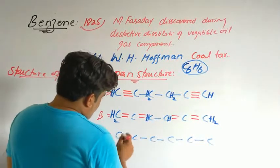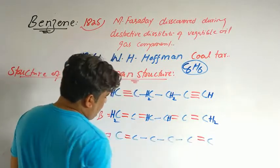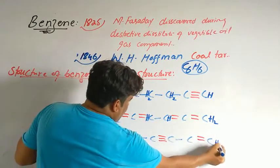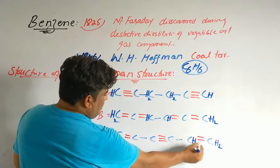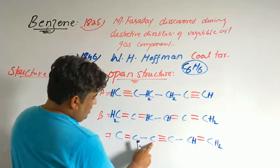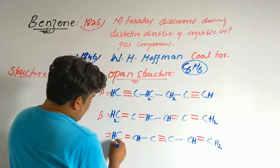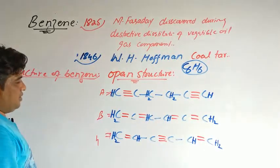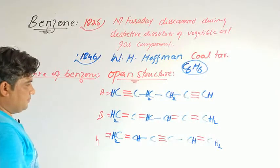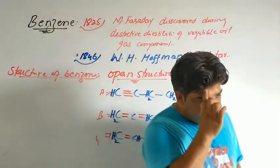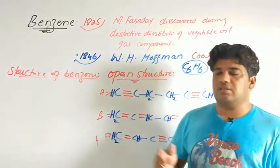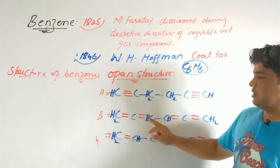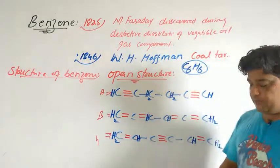Another open structure: if double bonds are placed on these two carbons and a triple bond in the middle, then certain positions need 2 hydrogens to satisfy carbon's valency of 4, while others need 1 hydrogen each. These were the open structures A, B, and C — the open structures of benzene proposed initially.